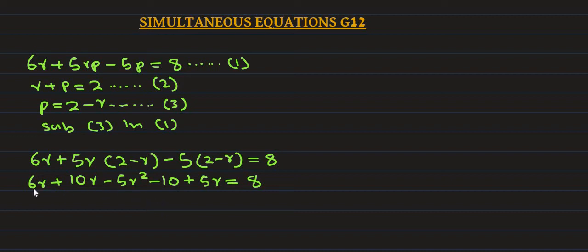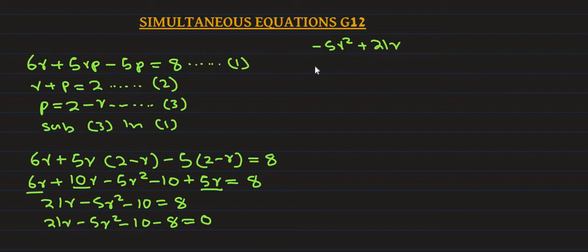Now add the like terms. Like terms are 6r plus 10r equals 16r, minus 5r squared. We have 6r, 10r, 5r. That's 6 plus 10 equals 16, plus 5 equals 21. So 21r minus 5r squared minus 10 equals 8.